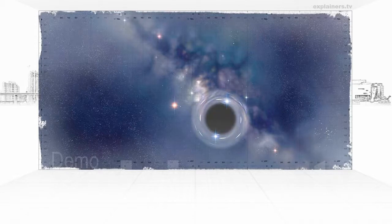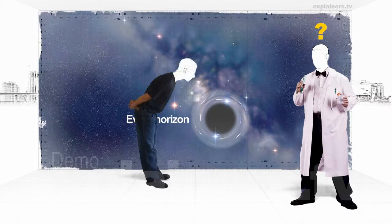This region where nothing escapes is called the event horizon. Science still cannot understand what happens there, but it seems that matter disappears from the universe, where space-time, as we know, comes to an end.